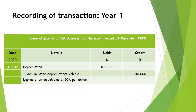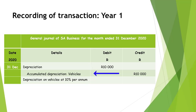Depreciation is recorded in the General Journal. In our example, the depreciation will be recorded on the last day of the financial year, namely 31 December 2020. The date will appear in the first column. In the details column, we first write the account to be debited, which is depreciation in our example, with the amount R10,000 in the debit column. In the next row, we write the name of the account to be credited, which is the accumulated depreciation account for vehicles. The amount of R10,000 is then recorded in the credit column of the same row.